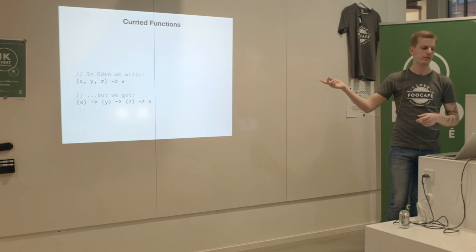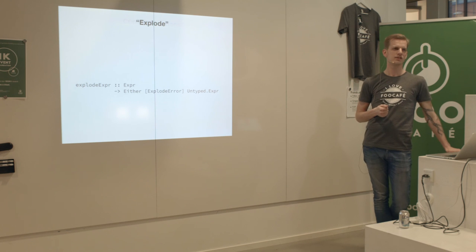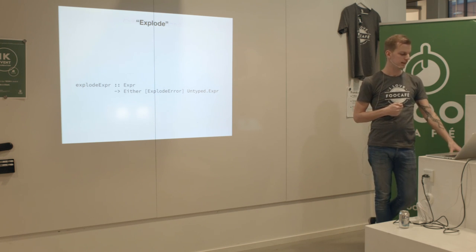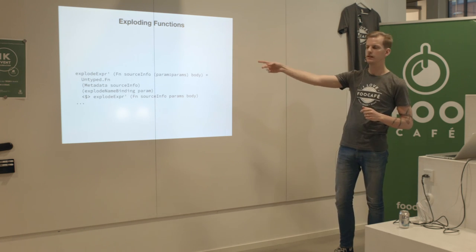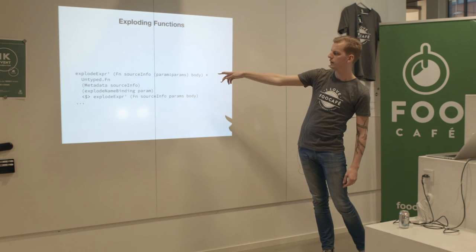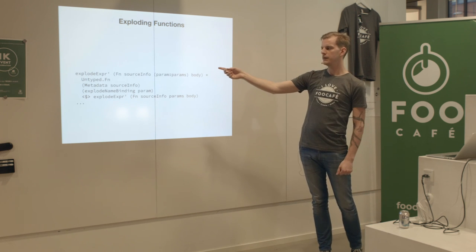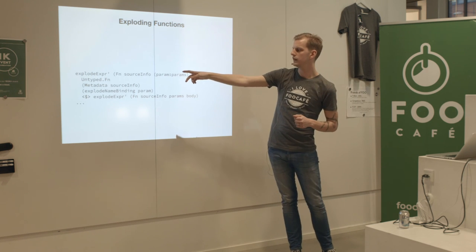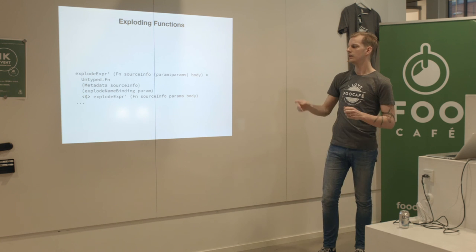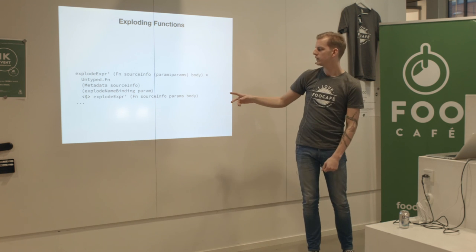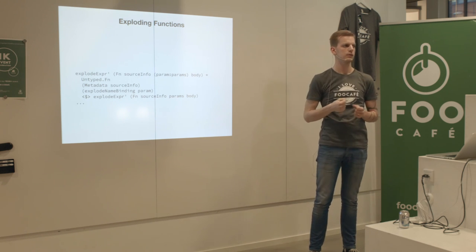This is a manifestation of curried functions in Oden. You can write a function that seems to take three arguments, but it gets translated to a function of one argument, to a function of one argument, to a function of one argument, to some body. The representations have this notion baked in, so when doing the transformation you have to cover this case. This is called 'explode' - or desugaring in more standard terminology. For functions, it takes a syntax function with one param and the rest, and creates nested untyped functions.